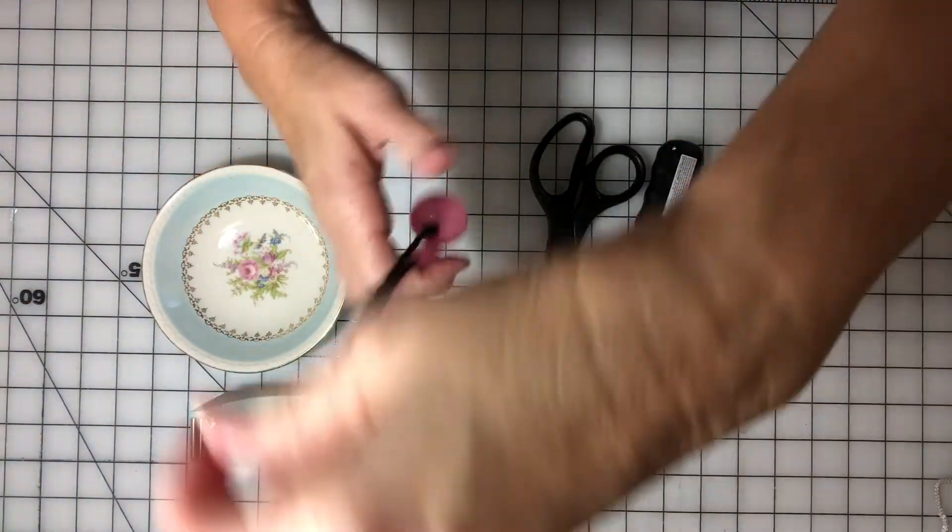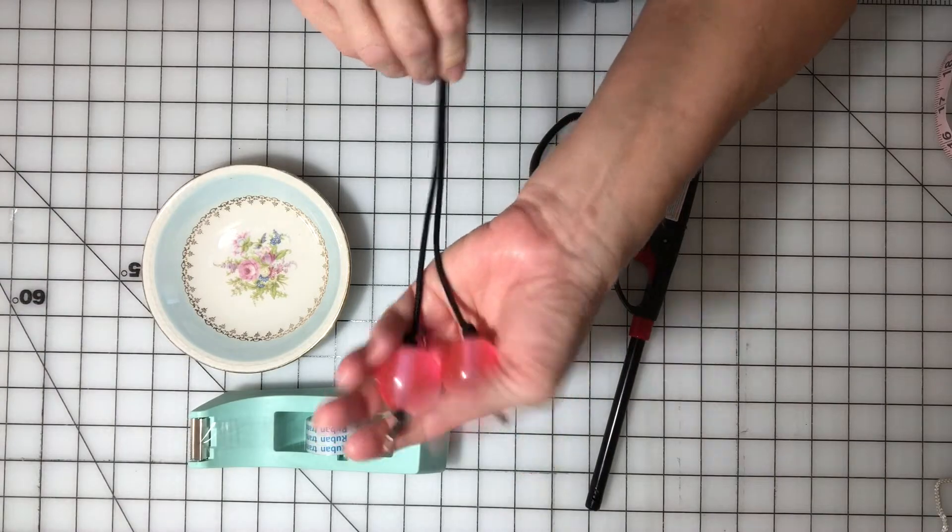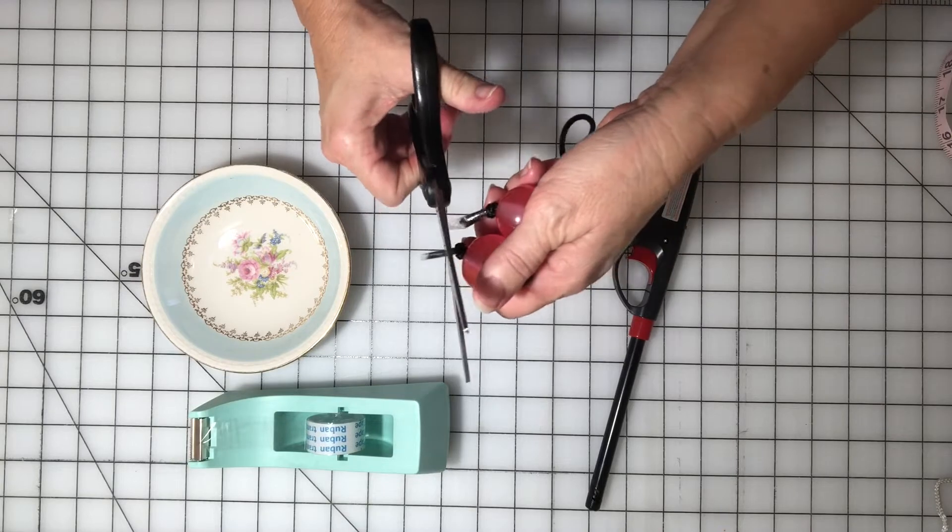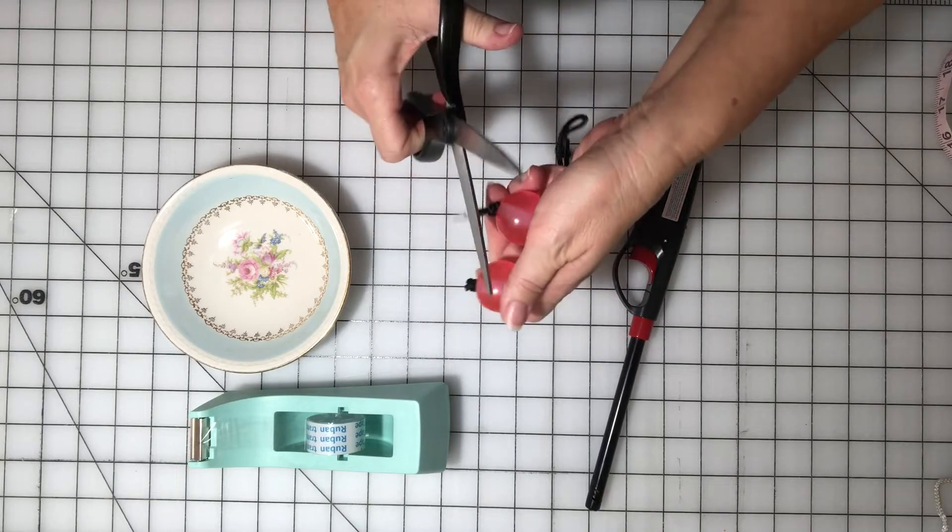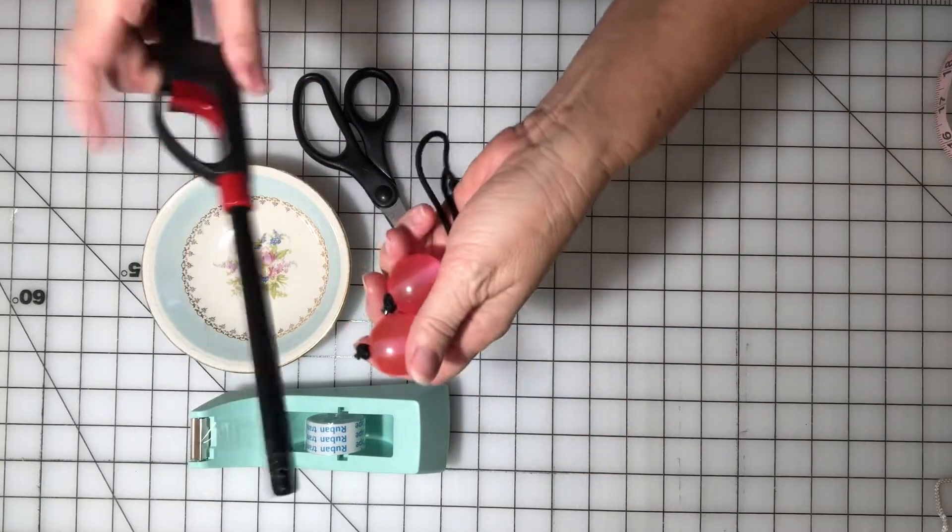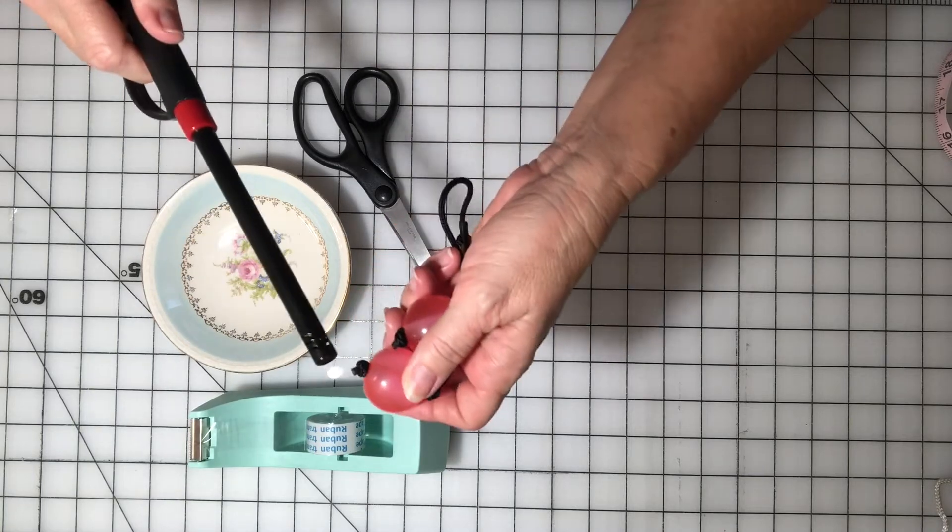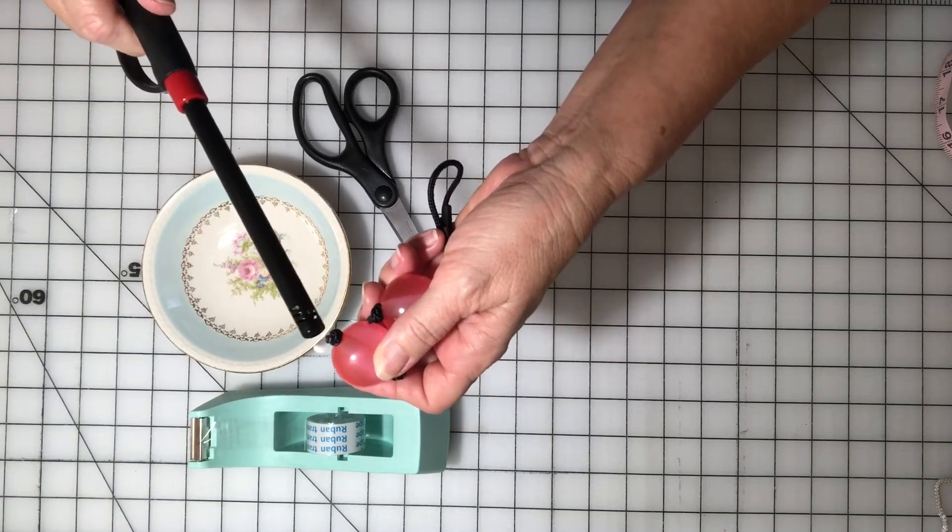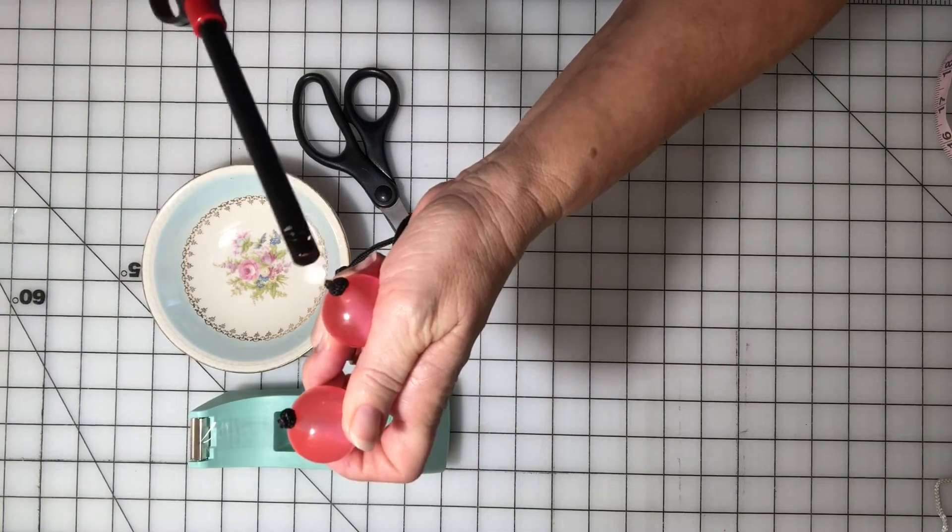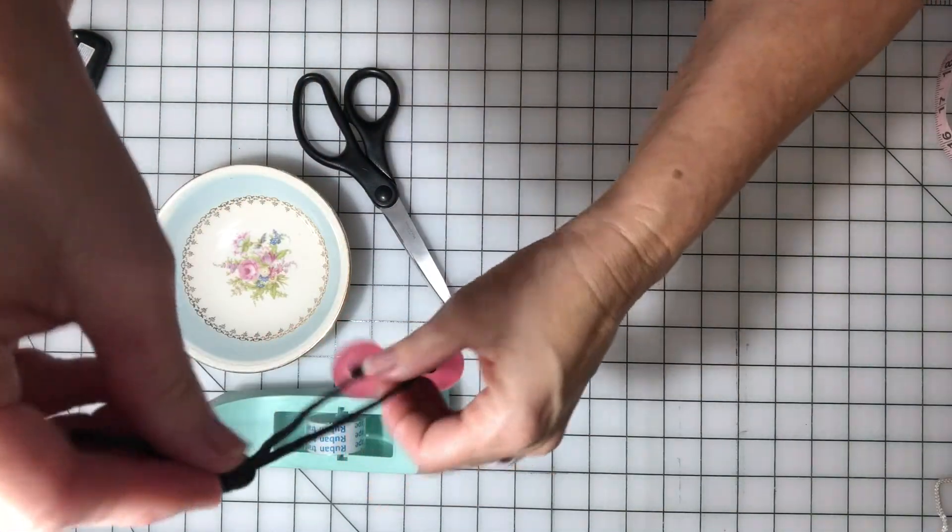Make sure they line up and they do. And now we're just going to cut off the little tails here and we're going to take this lighter and just light the ends to keep it from fraying and coming undone. Just like that. And we're done.